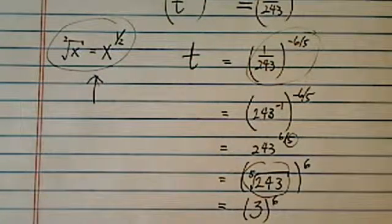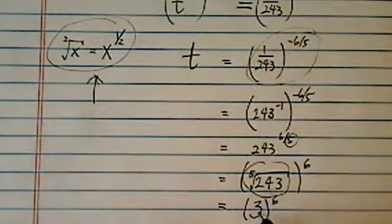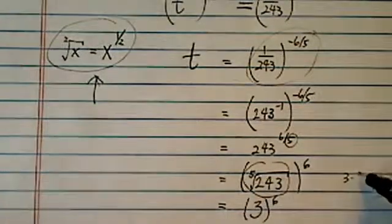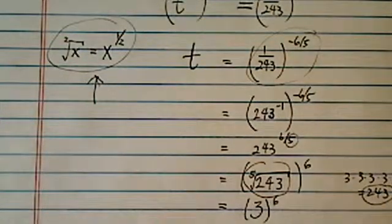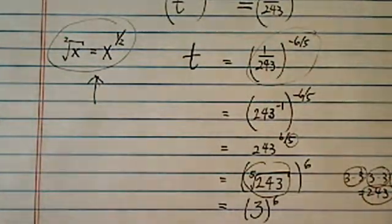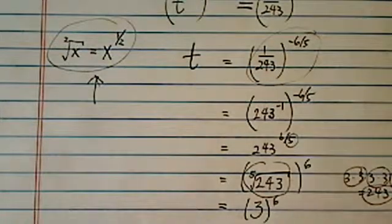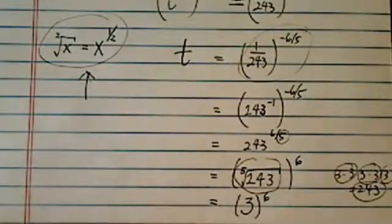Three multiplied by itself five times is equal to 243. And how do I know it? Experience. This is nine. This is nine. Nine times nine is 81. Eighty-one times three, it's 243.